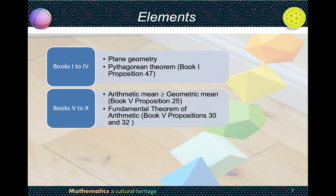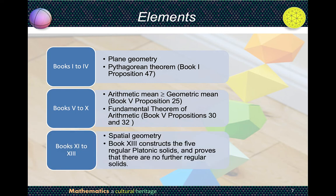The fundamental theorem of arithmetic states that every number can be decomposed into products of primes uniquely. Books 11 to 13 talk about spatial geometry. In Book 13, it constructs the five regular Platonic solids and proves that there are no further regular solids.